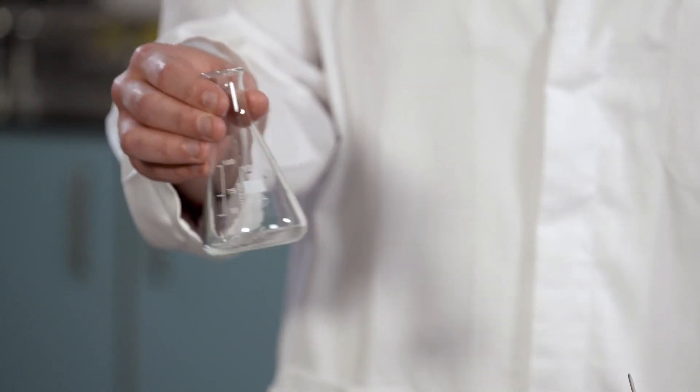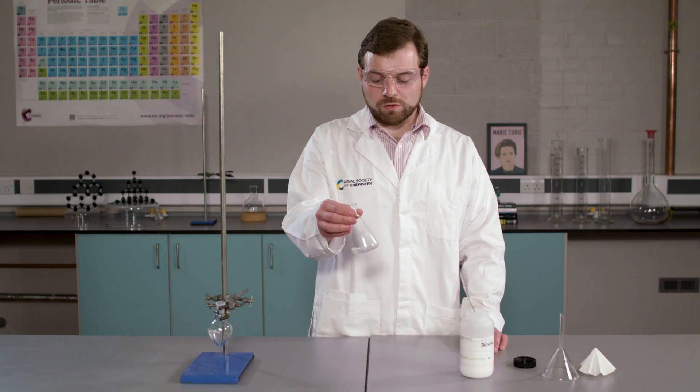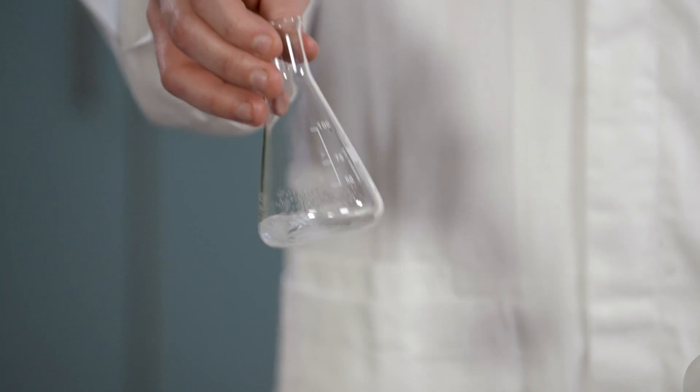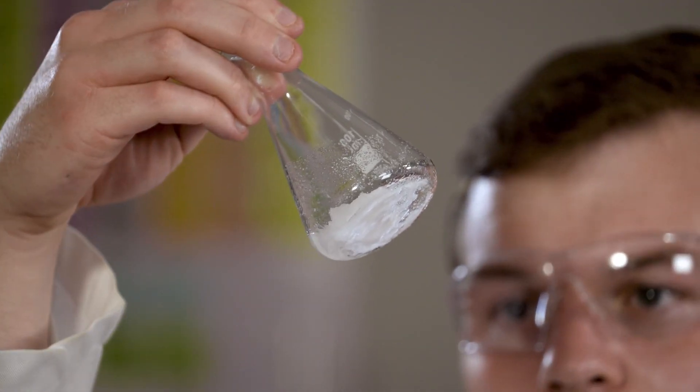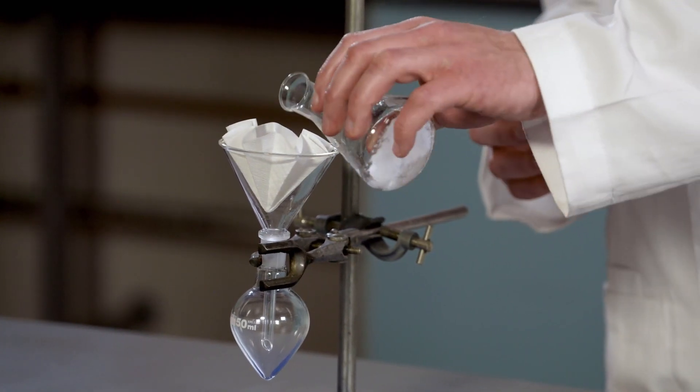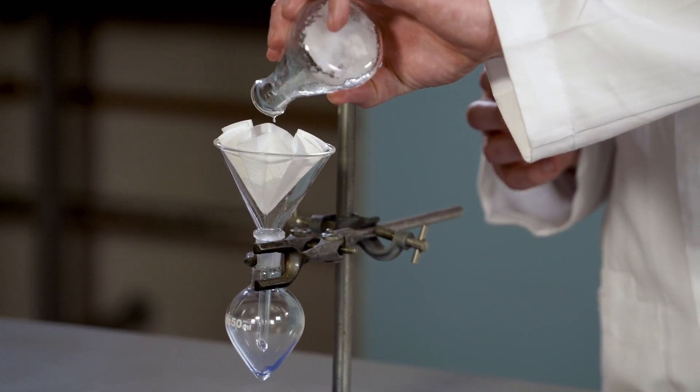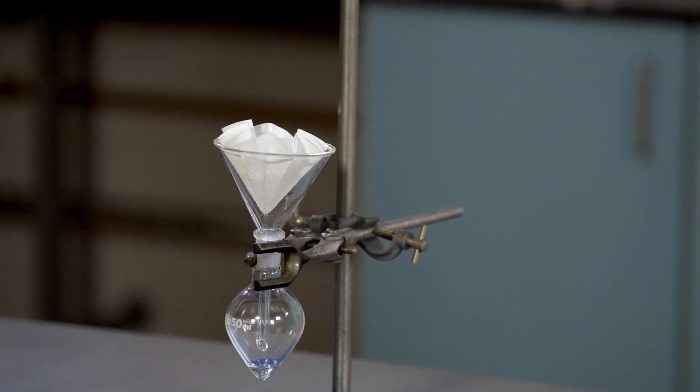As you can see, the sodium sulphate has clumped together. This is because there was trace water in the liquid. Once all the trace water is removed, the sodium sulphate will no longer clump together. It is now ready to be filtered into a pear-shaped flask. We are now ready to dry our organic liquid.